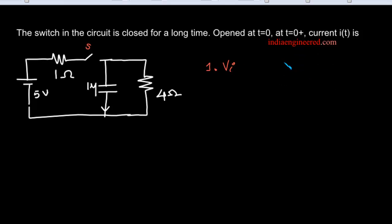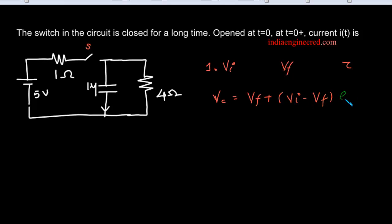First, what we are going to do is find out what is the initial voltage of the capacitor. Then we will find out what is the final value of voltage across the capacitor after the switch is opened. Then we will look at the time constant tau of the circuit. Then we will find out what is the voltage across the capacitance for all time t, which is V_final plus V_initial minus V_final, times e to the power minus t by tau. From this we find out the voltage across the capacitor, and once we know that, we can easily find out the current through it.